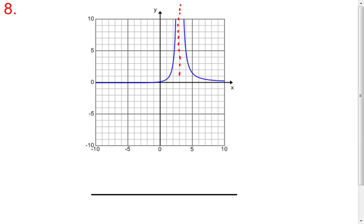And then this, again, you can see has an asymptote that is right here at 3, it looks like. So this is also rational.